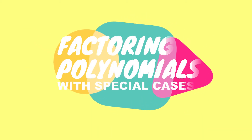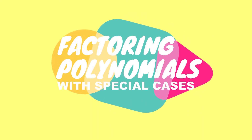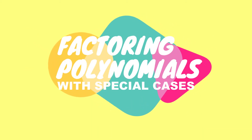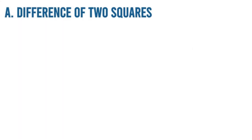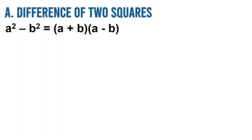Our lesson for today is about factoring polynomials with special cases — difference of two squares. So if the given polynomial is like a squared minus b squared, the factors must be a plus b times a minus b.